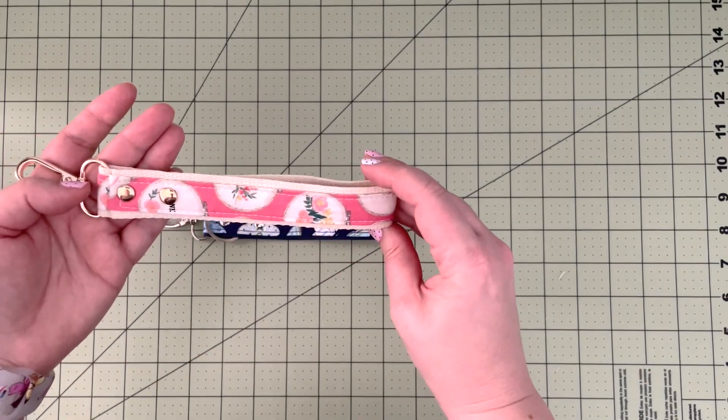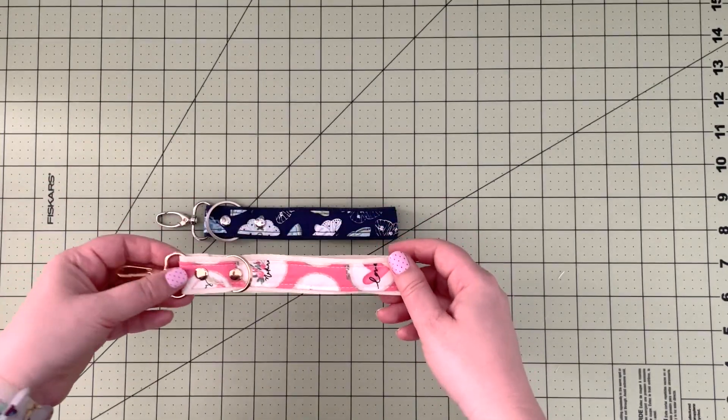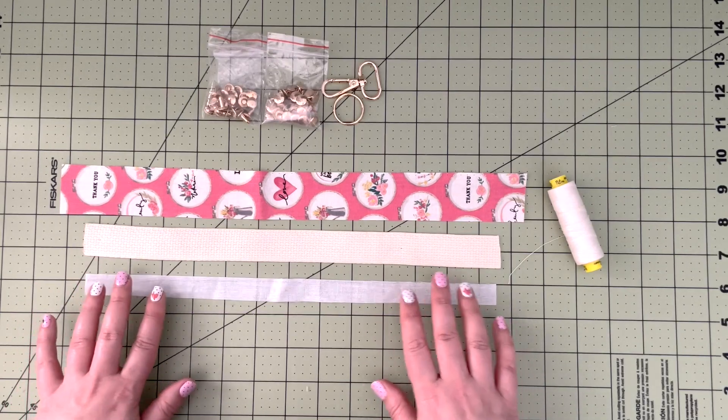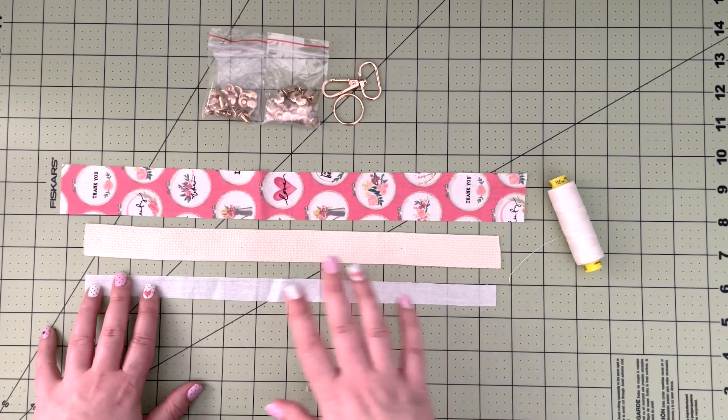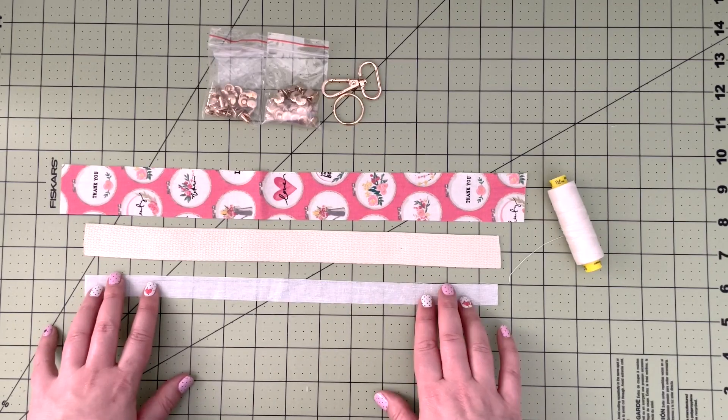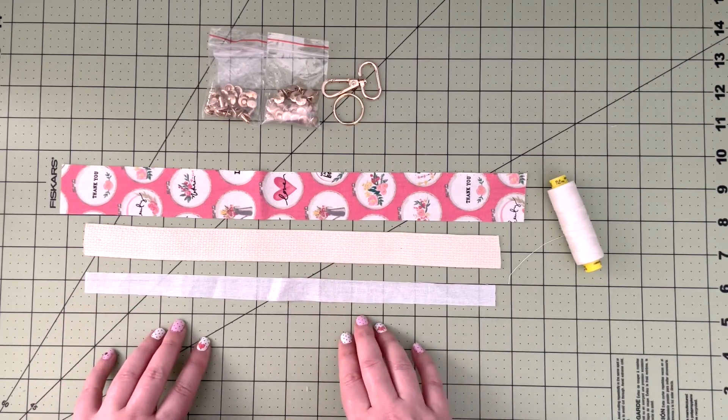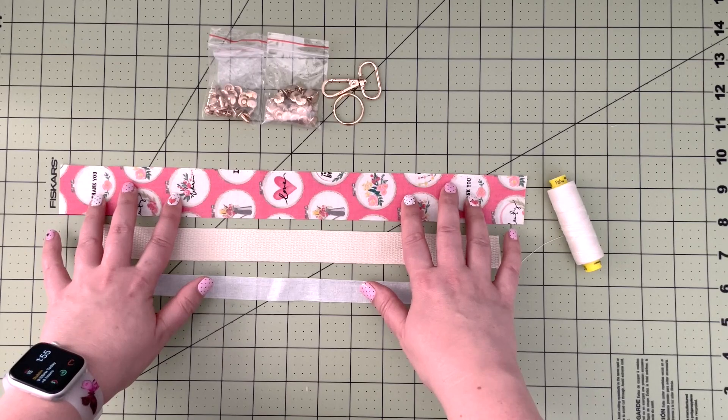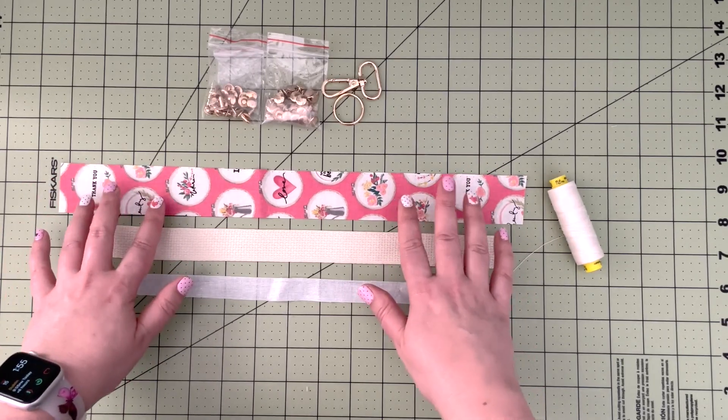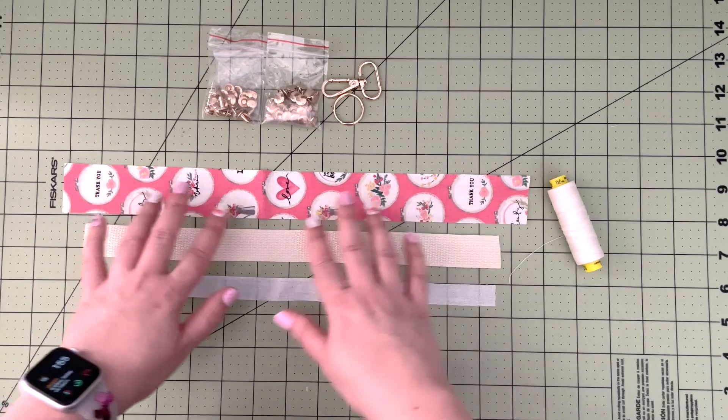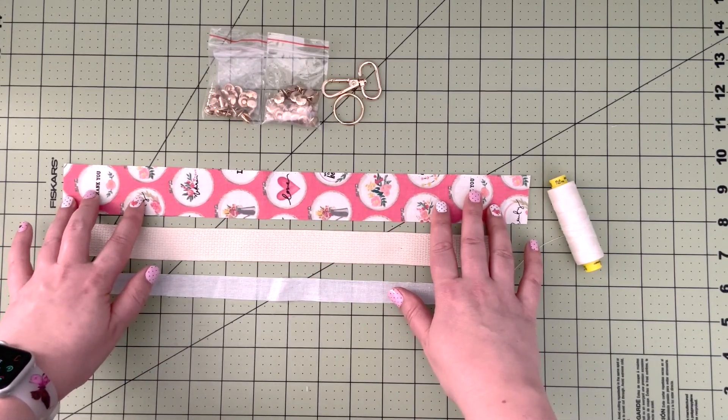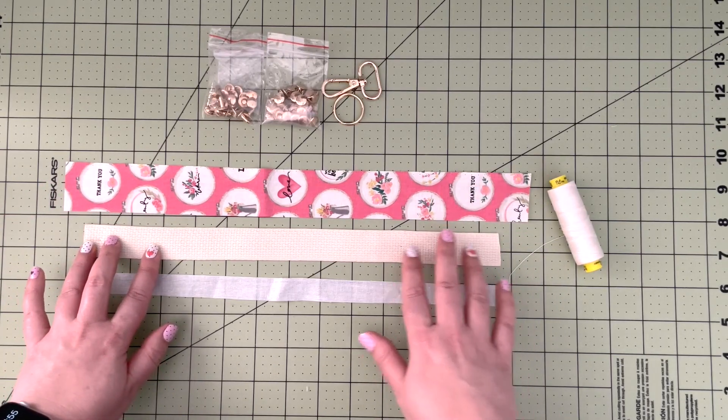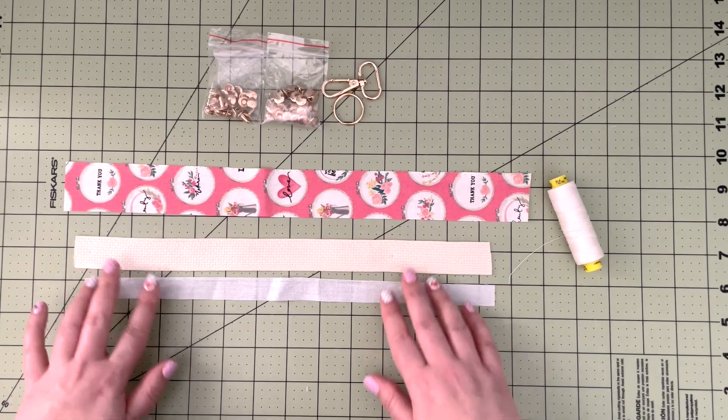Let's get started. All the supplies needed to create our key fob will be listed in the description box below. All the measurements will be included. I'll just run through the list really quick, so I'm using a woven cotton material - it could be any quilting cotton. I'm just using something that's decorative, so choose a fabric of your choice.